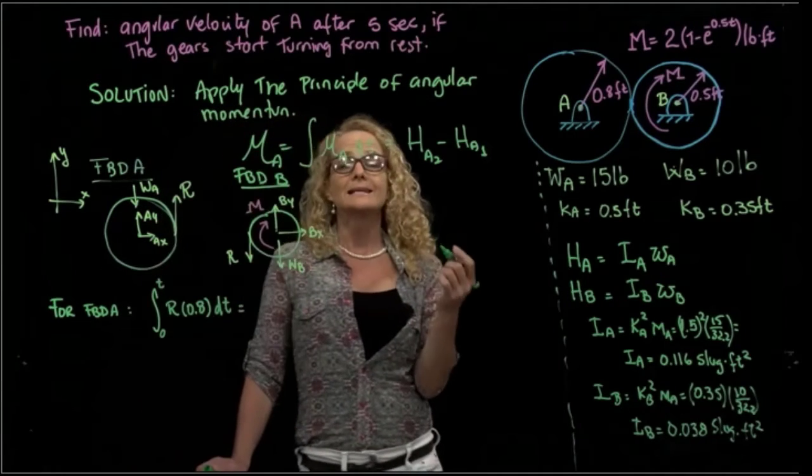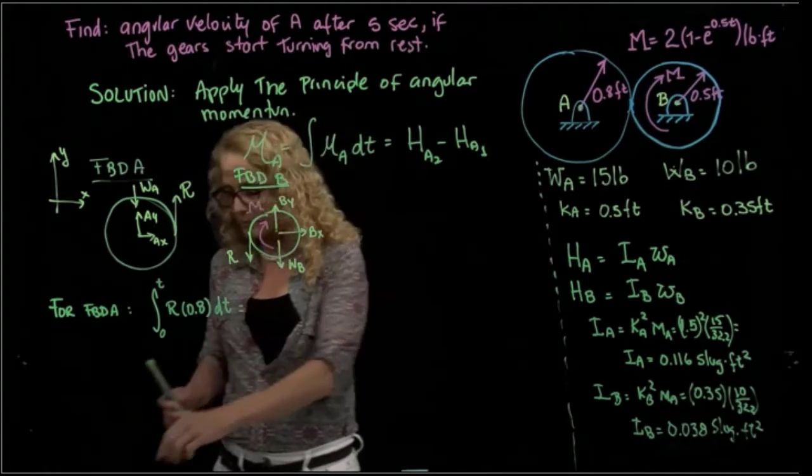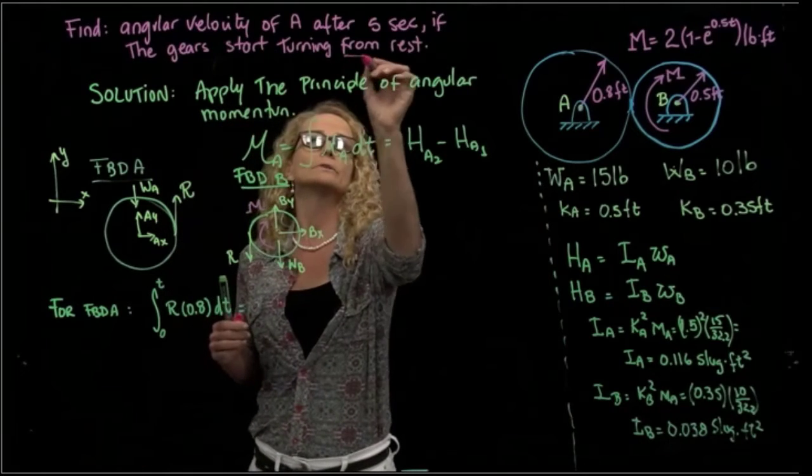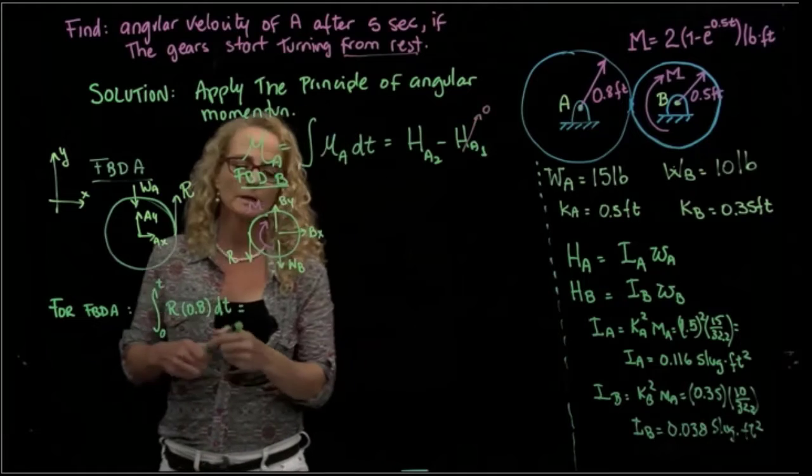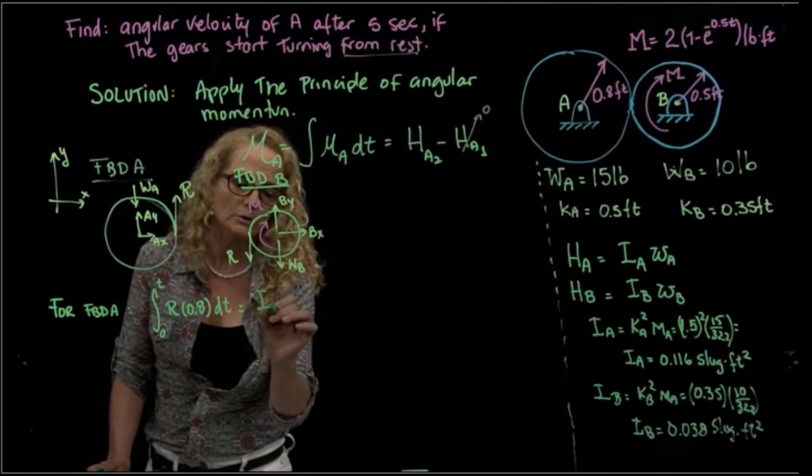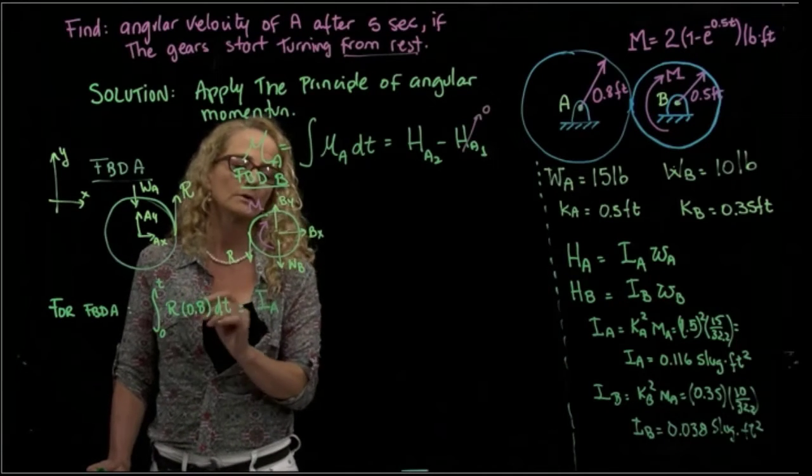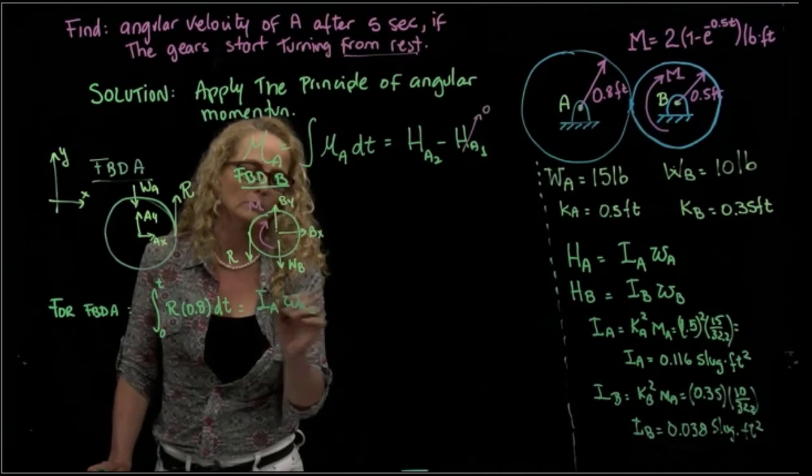That will be equals, since it starts from rest, that's why we have to really read the question. We know that the first position is 0, so this will be equals only to the inertia, the mass moment of inertia times the velocity A2.